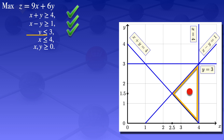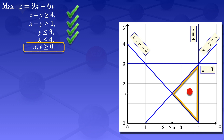For x ≤ 4: our x is 3.5, and 3.5 < 4, so that constraint is satisfied. For the non-negativity constraint, x, y ≥ 0: x = 3.5 and y = 1.5 are both ≥ 0, so that is satisfied. Points in this region satisfy all the constraints, so that is our feasible region.